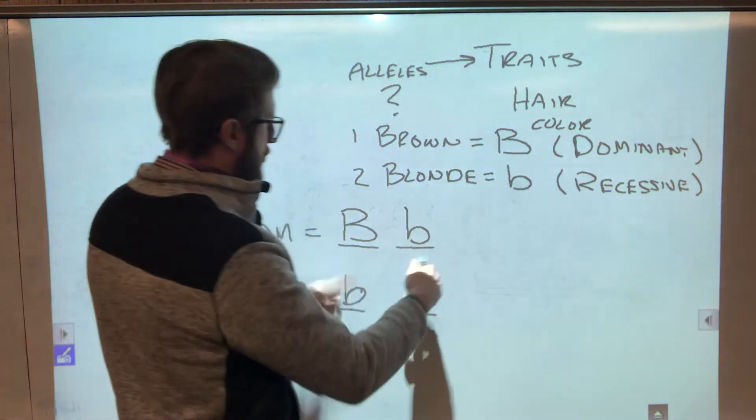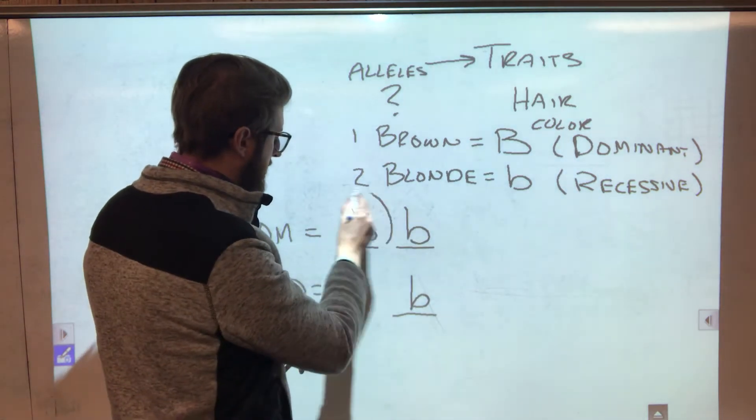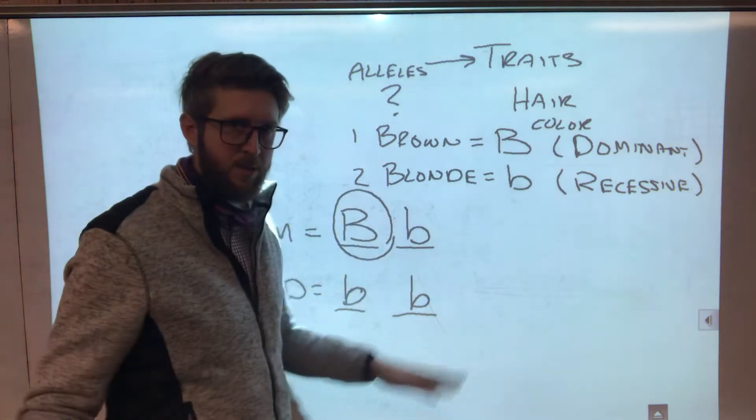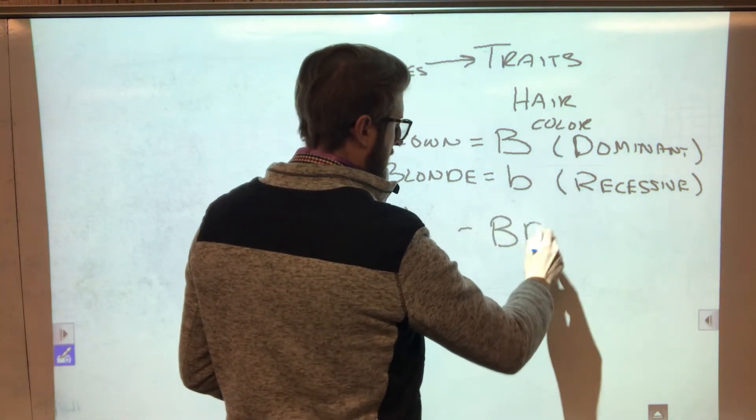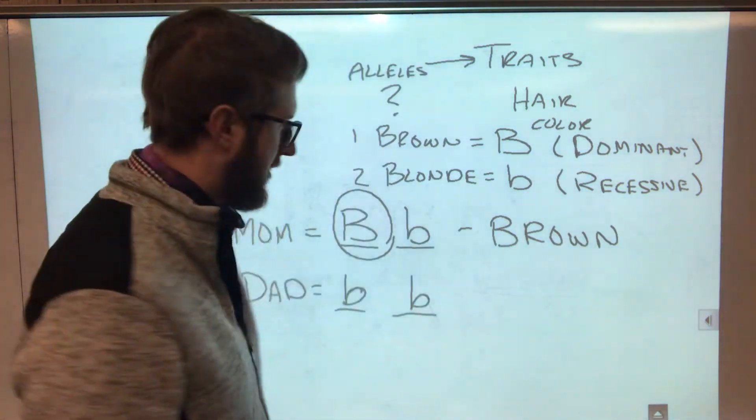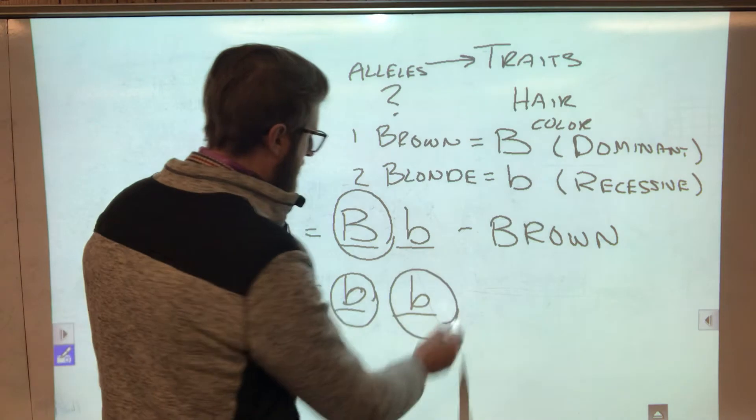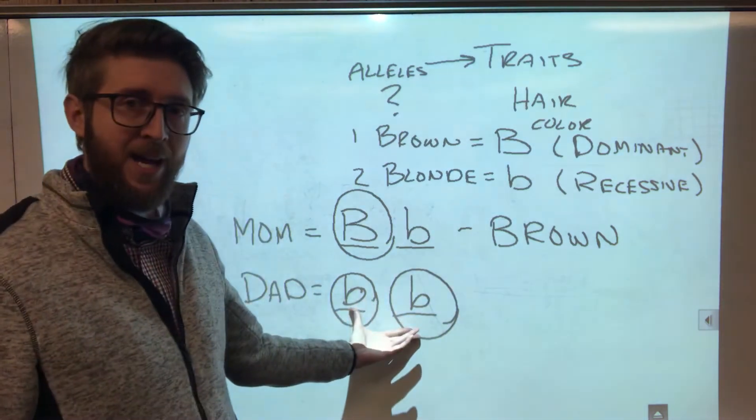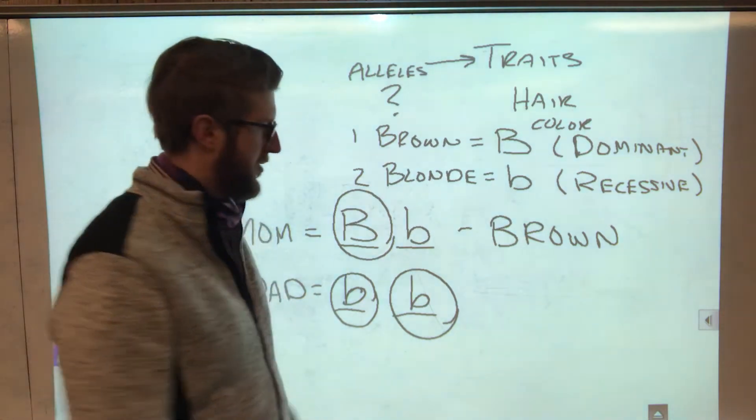And which one? Well if there's a dominant one it's always going to be the dominant one, 100% of the time. So mom is going to have brown hair. This is called the phenotype by the way. Dad, it doesn't matter which allele gets expressed by dad because whichever one gets expressed it's going to be a little b either way. So dad is going to be blonde.